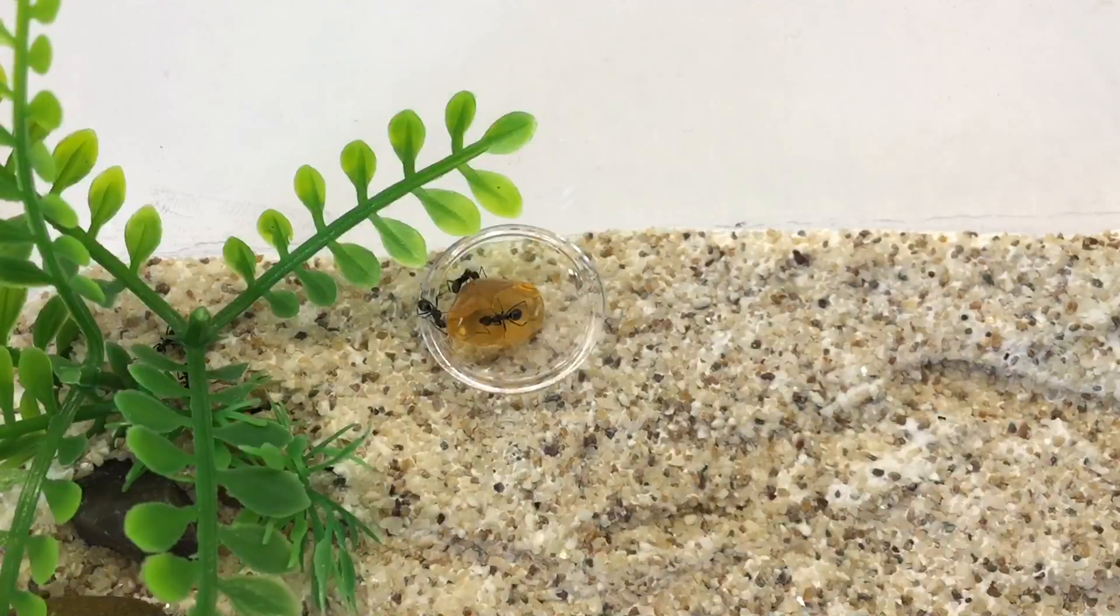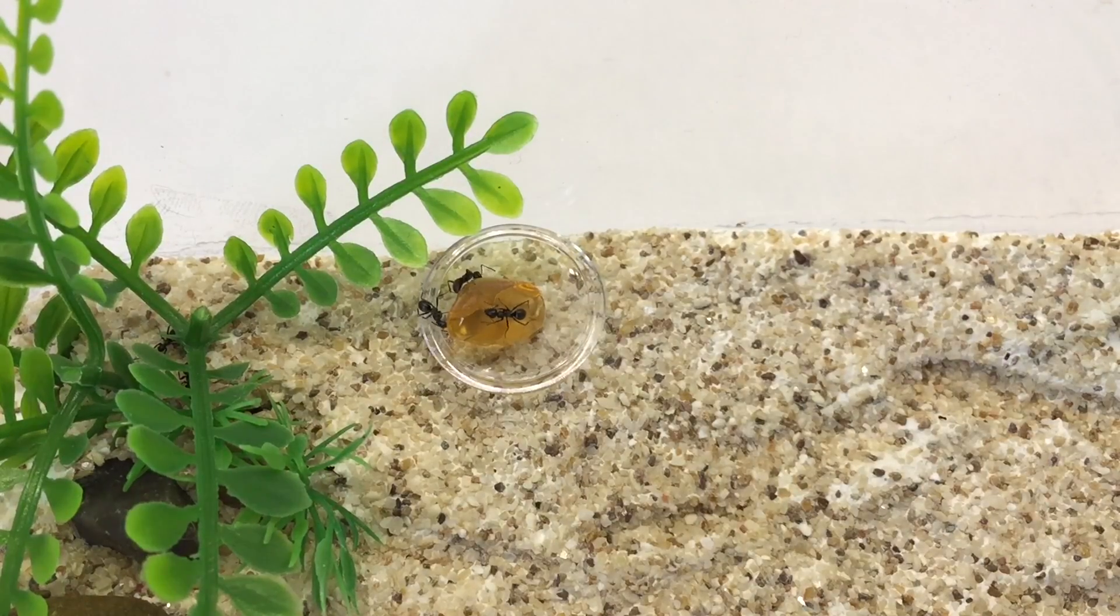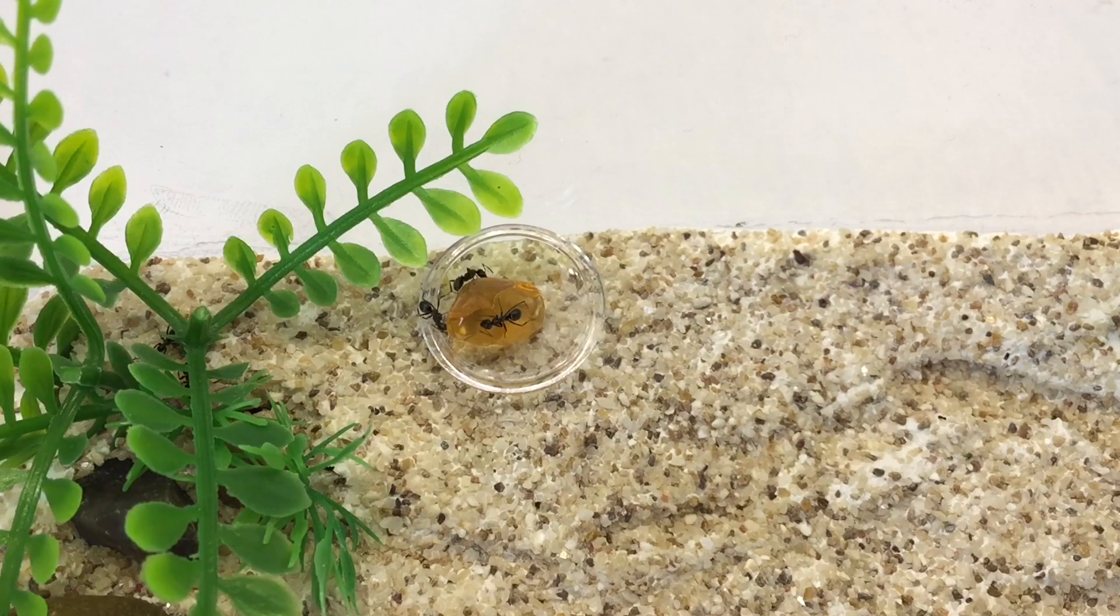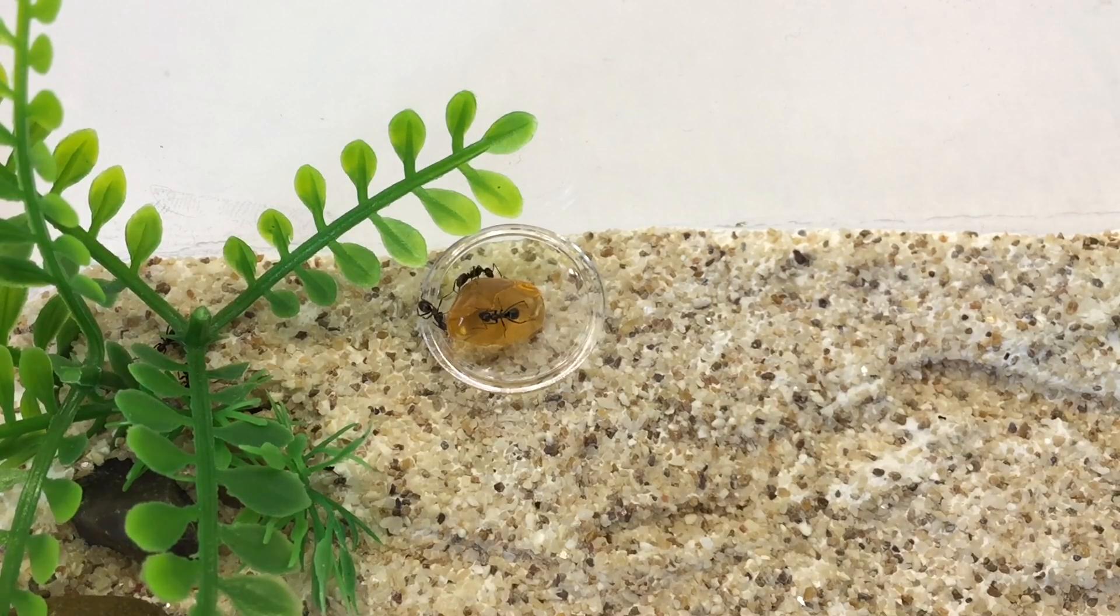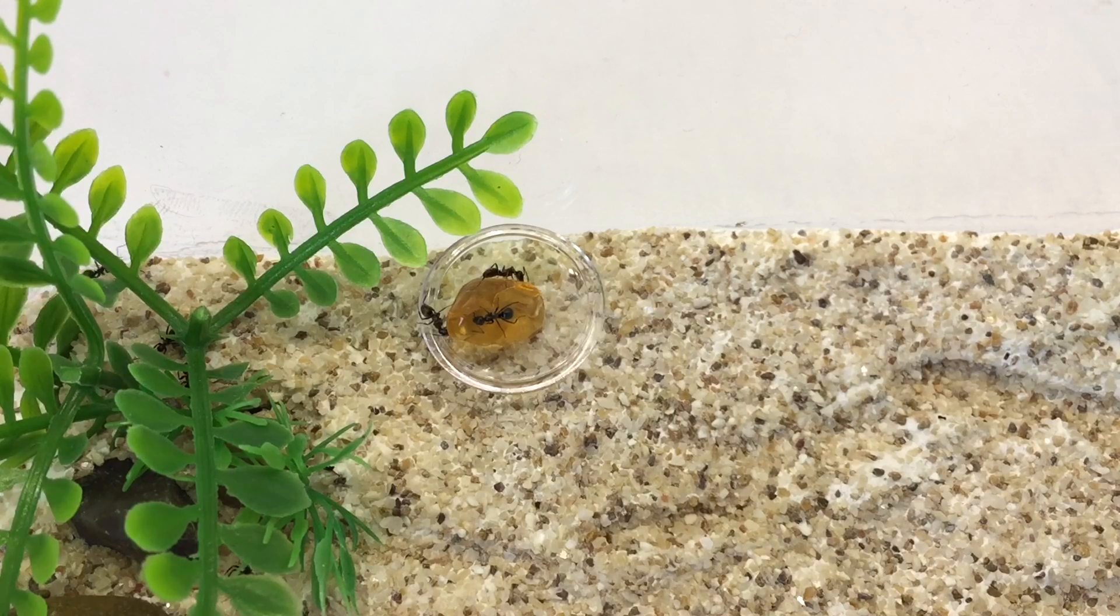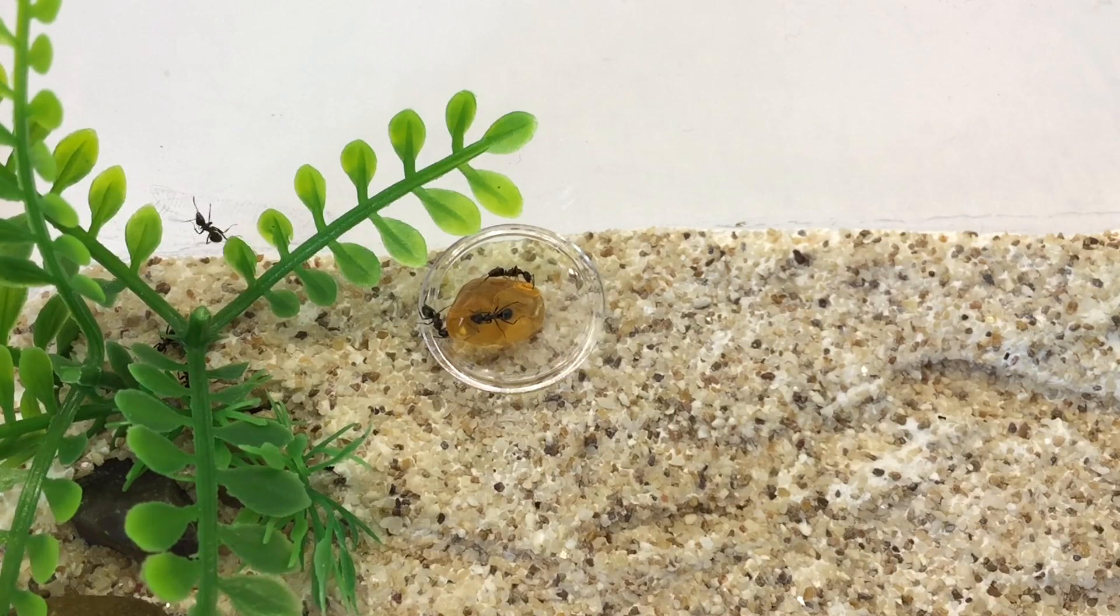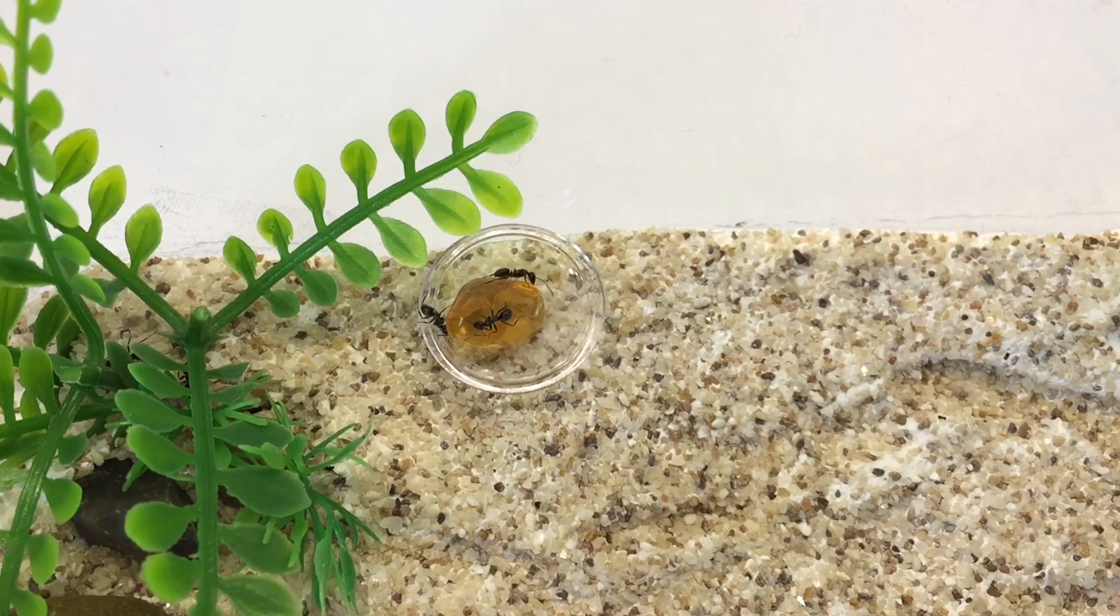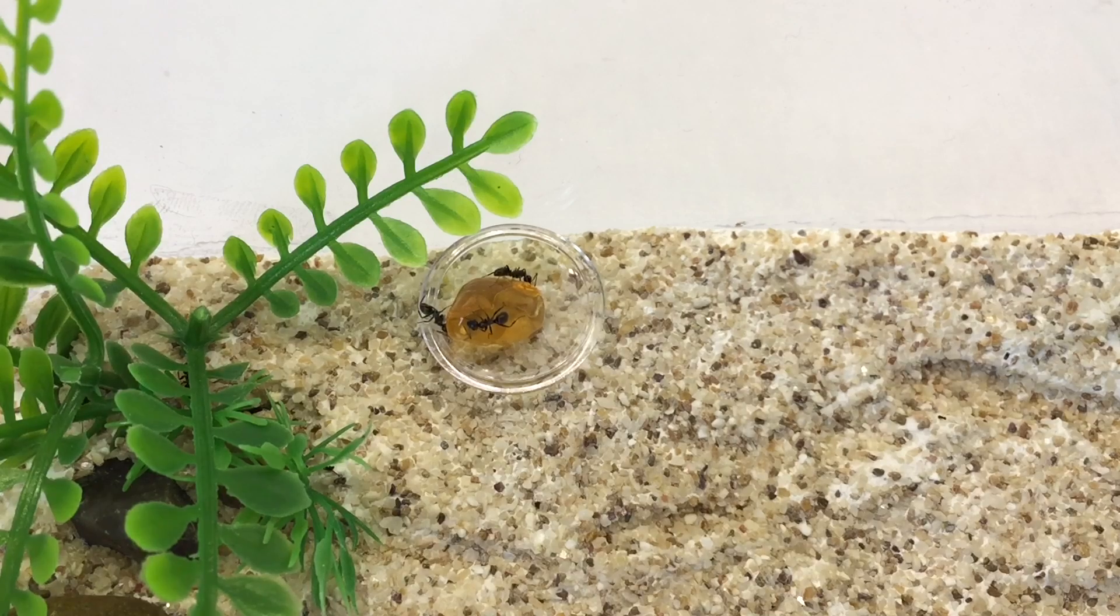Now as the pheromone trail and the message spread that food was found, a third ant quickly joined up. Now all the ants that were in the outworld have found the food, but as the message spread, more and more ants were drawn to the outworld, and eventually about 30 ants were eating.